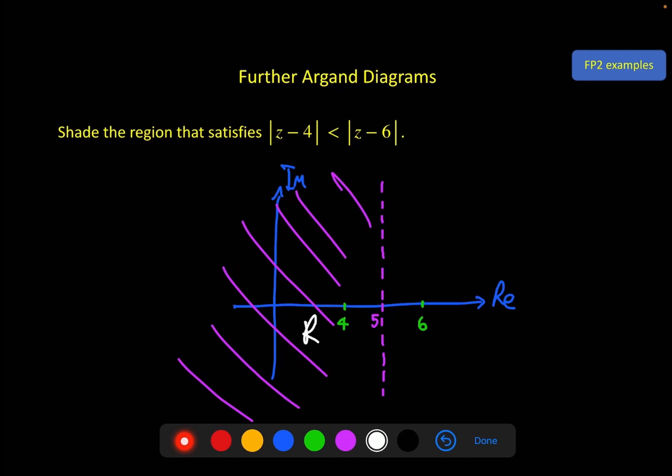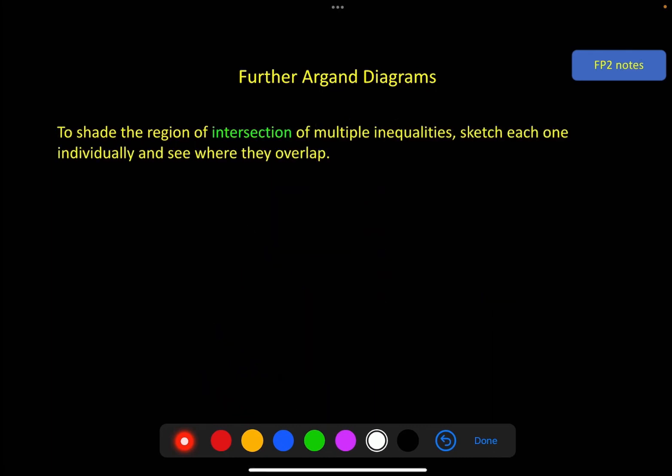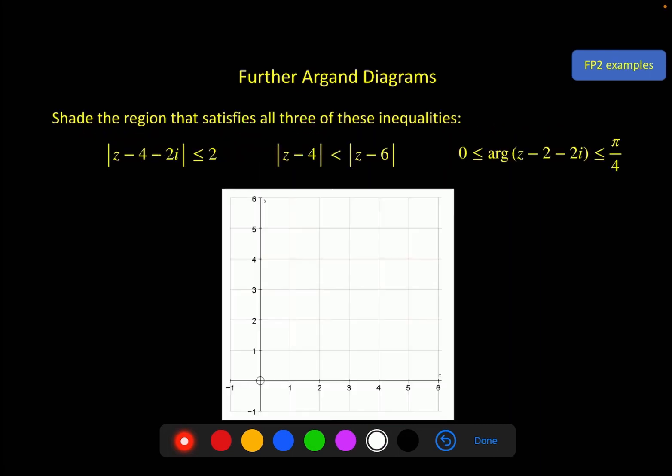There are two further quick notes. The first is that you might have to do multiple inequalities overlapping to give a region of intersection. If this is the case, sketch each one individually, just see where they overlap and then label that region. For example, we're going to take the 3 that we've already done. We did this one, which was a circle. Inside the circle looked like this. We had this one just on the previous screen. A vertical line through 5, the left-hand side of that. And it was a dashed line rather than a solid line.